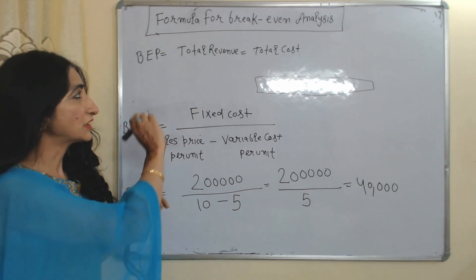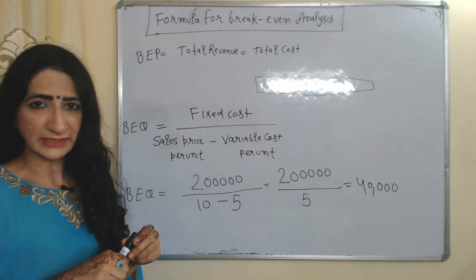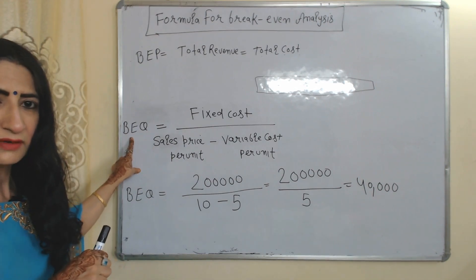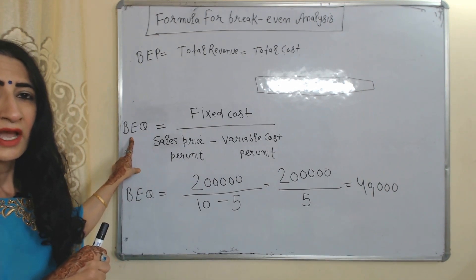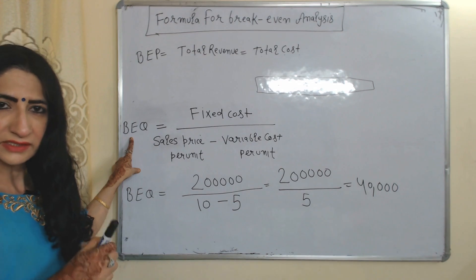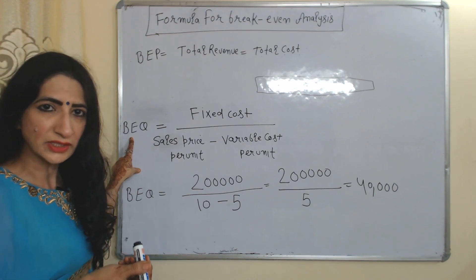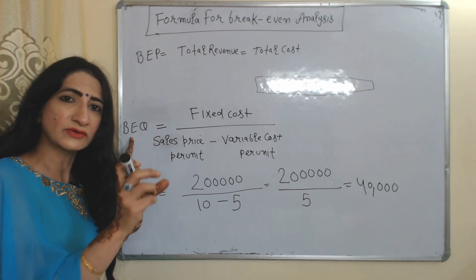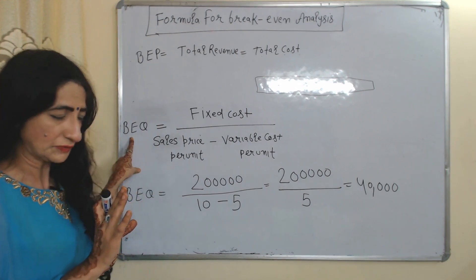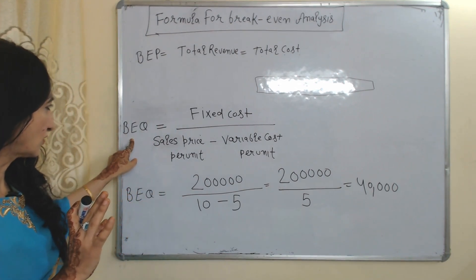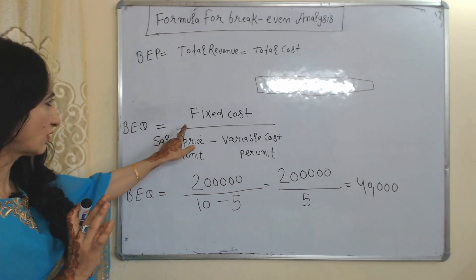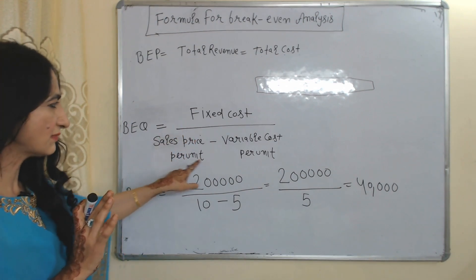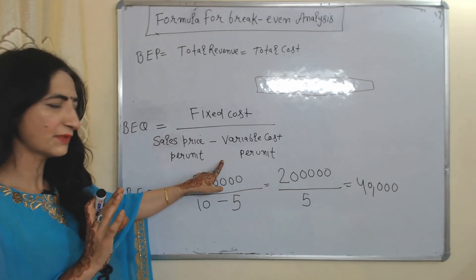Now we'll see the formula of breakeven analysis. In this formula, BEQ means breakeven quantities — that is, how much quantity we need to sell in order to reach the point where total revenue becomes equal to total cost. The formula for calculating BEQ is: BEQ = Fixed Cost divided by (Selling Price per Unit minus Variable Cost per Unit).